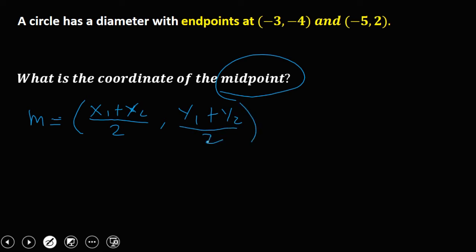So the same values. This one is x₂, so substitute now the value. So for x₁, we have -3 + (-5) over 2,